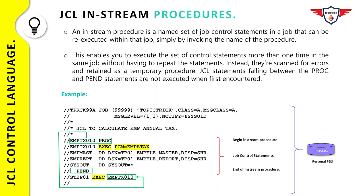Now it's time for the answer: the maximum number of in-stream PROCs that can be included in a single JCL is 15. Let's see how many of you got the correct answer.